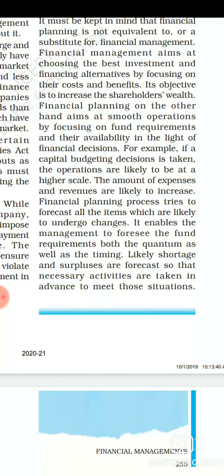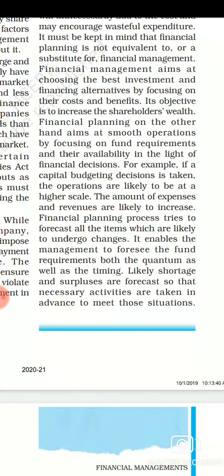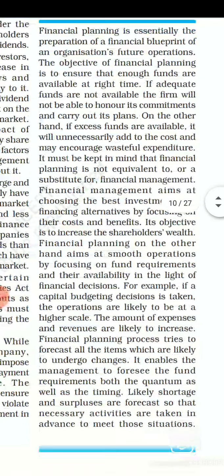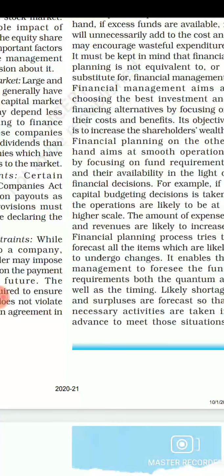Financial planning is not like financial management. Financial planning's main aim is to see that funds requirements and their availability are met in the light of financial decisions. The main objective of financial planning is to see that business operations work smoothly — and operations work smoothly only when funds required by the business are available at the right time and in the right quantity. So financial planning and financial management are different concepts: financial management aims to maximize shareholder wealth, while financial planning ensures smooth business operations.